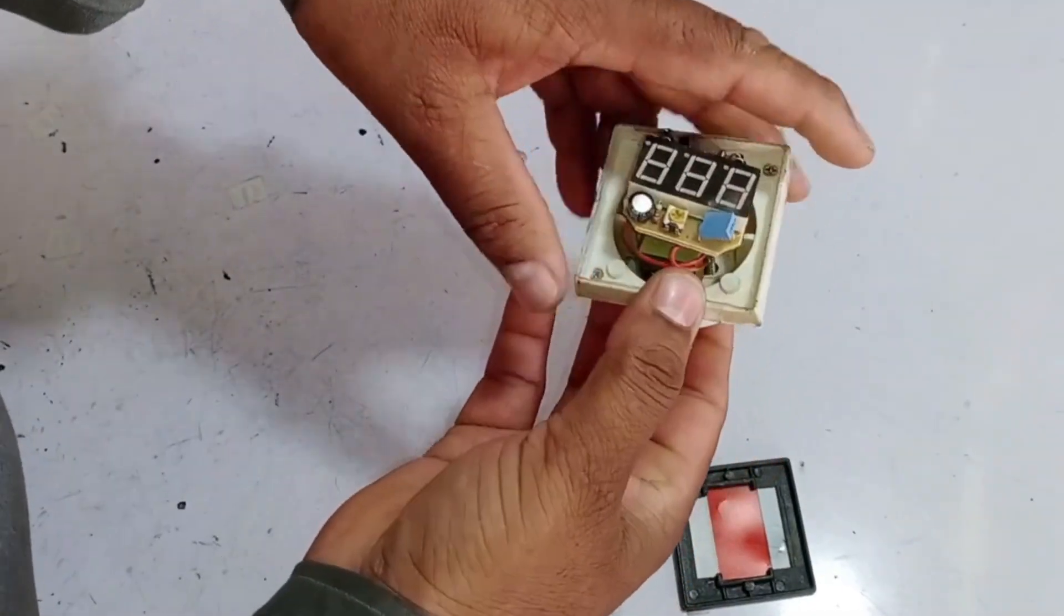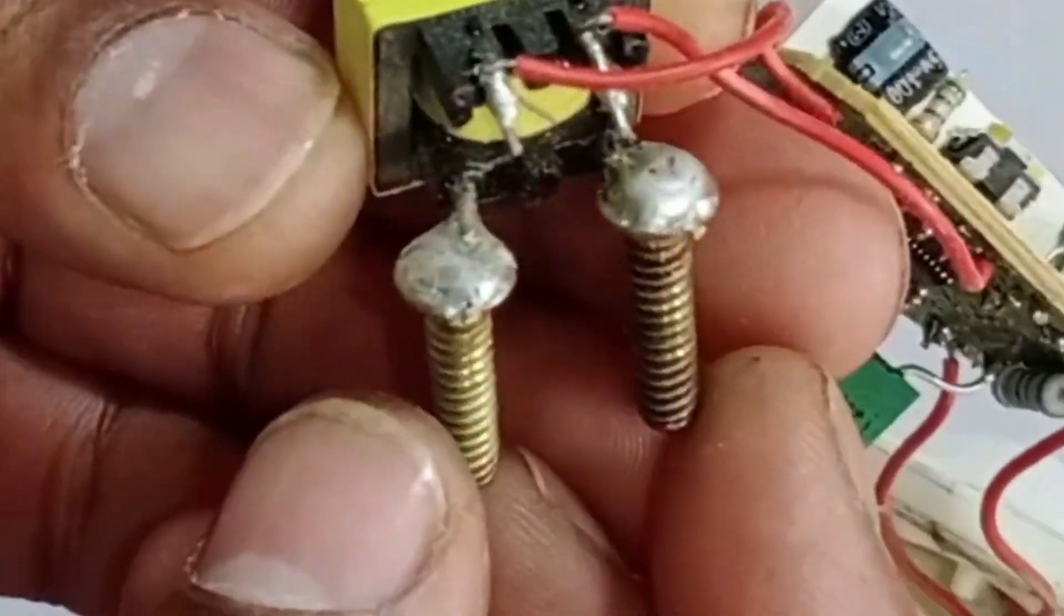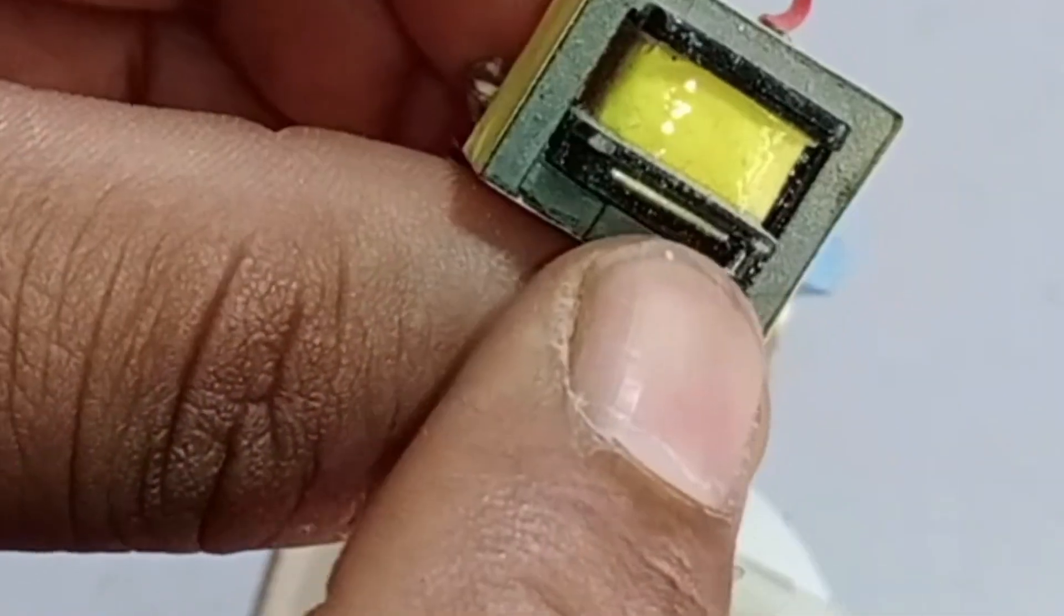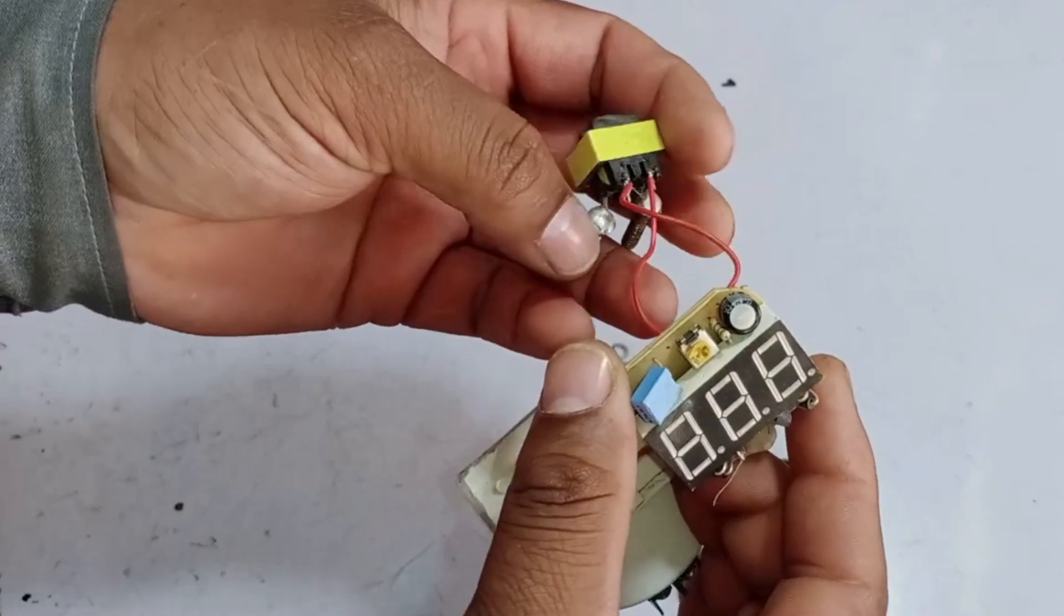Once you push it out, the entire assembly will come out. Here, take a closer look at the current transformer. Notice the connection points attached to it and how the wire passes through it. The rest of the coil senses the current and digitally displays the readings.